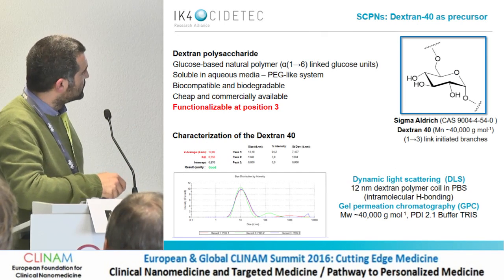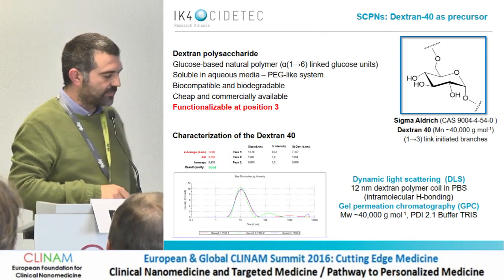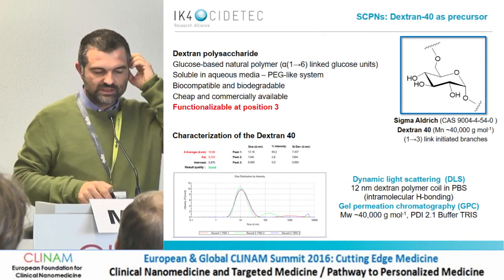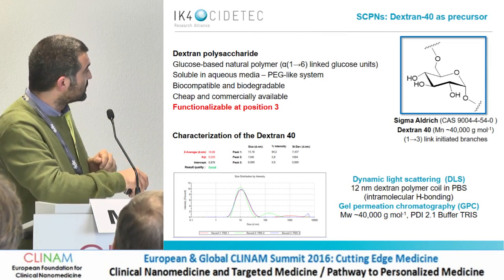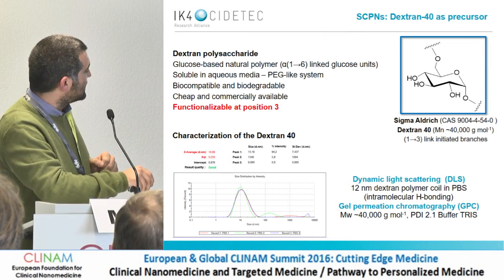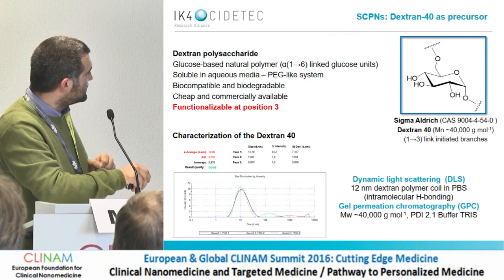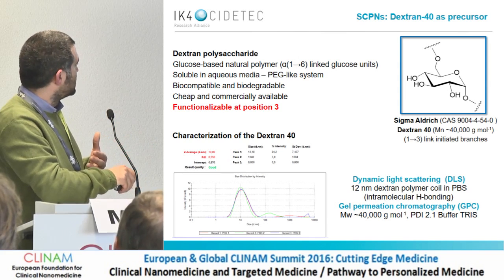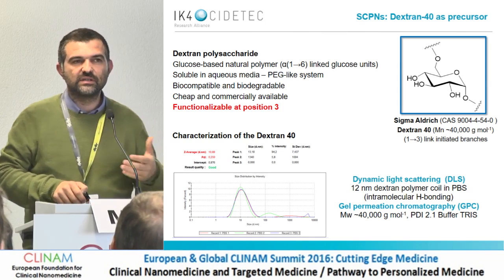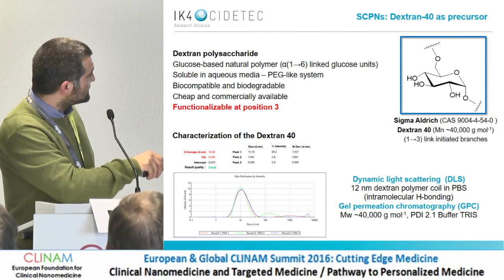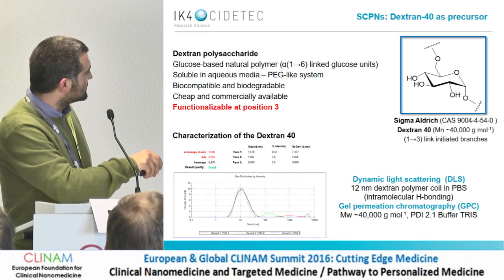In my case I will present the choice of the polysaccharide dextran 40. This is a glucose-based polymer — an alpha-1,6 polymer, also branched at the alpha-1,3 position. The good thing is it is very soluble in water, biocompatible, biodegradable, commercially available, and cheap. We can also functionalize it almost selectively at position 3.